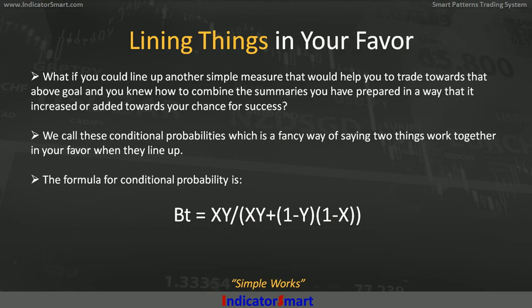So what if you could line up another simple measure that would help you to trade toward that above goal, and you knew how to combine the summaries that you'd prepared in a way that increases your chance of success, making it even better than 94%? We call that a conditional probability, which is really just a fancy way of saying two things work together in your favor when they line up. There's a mathematical formula for that, and I'm going to cover how that works and even show you how to do it without having to use the formula.